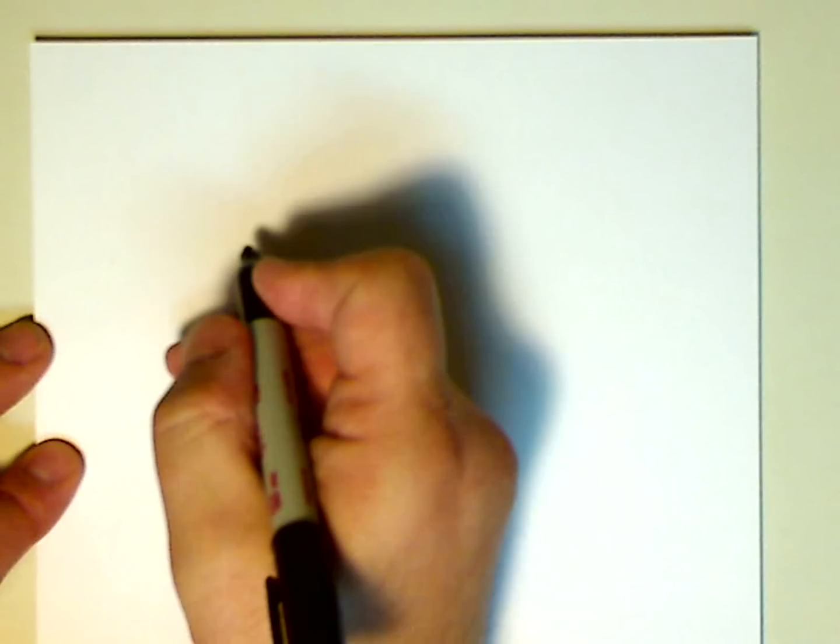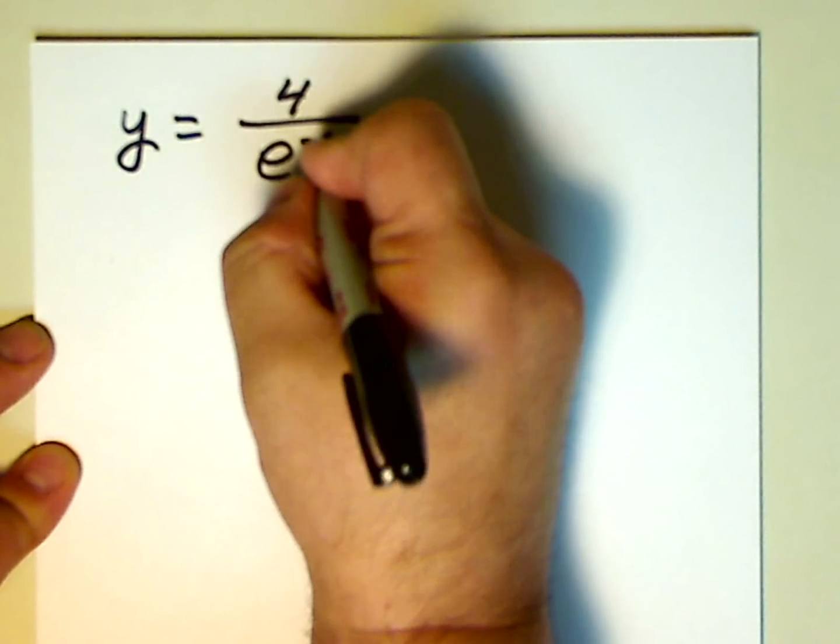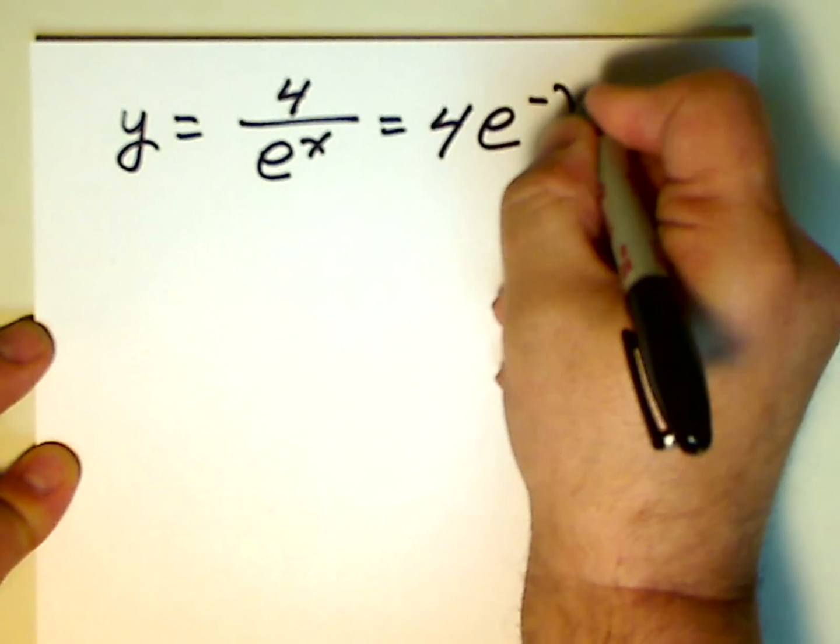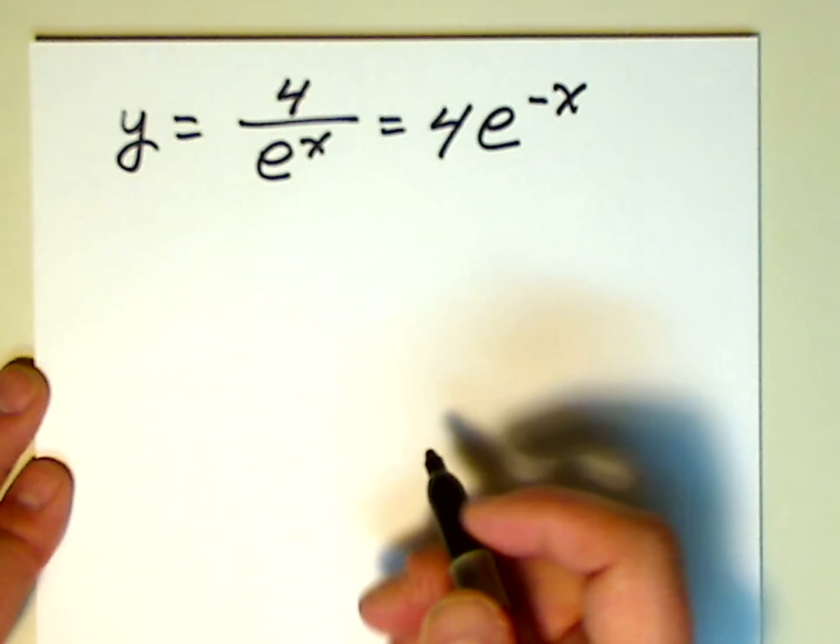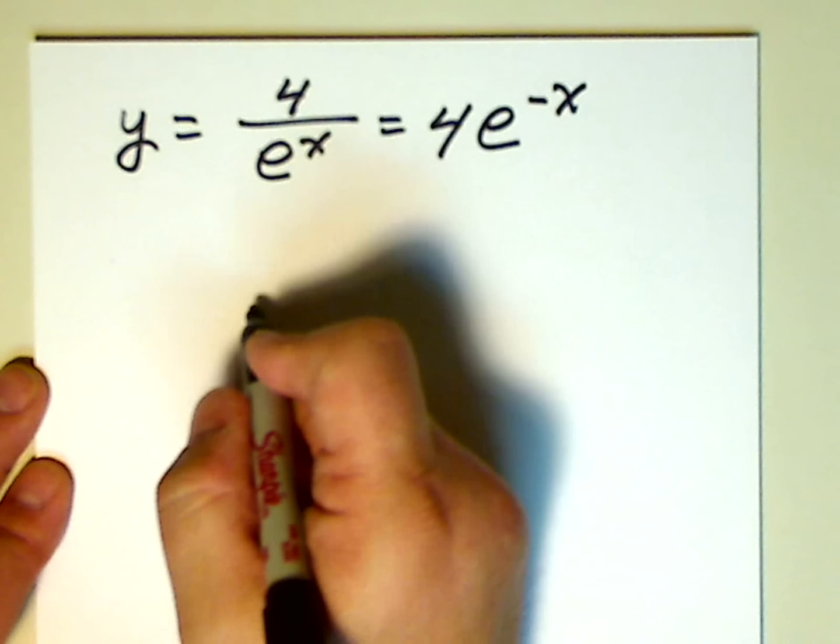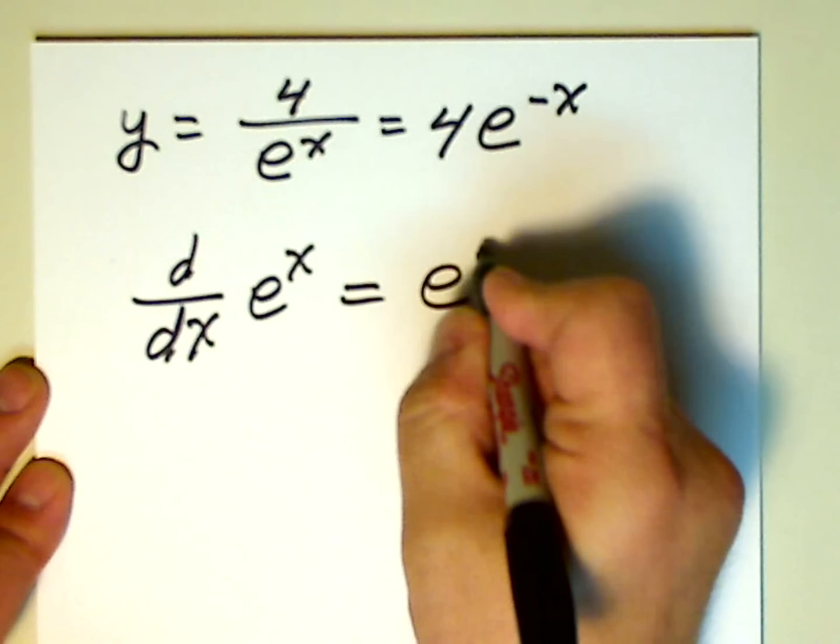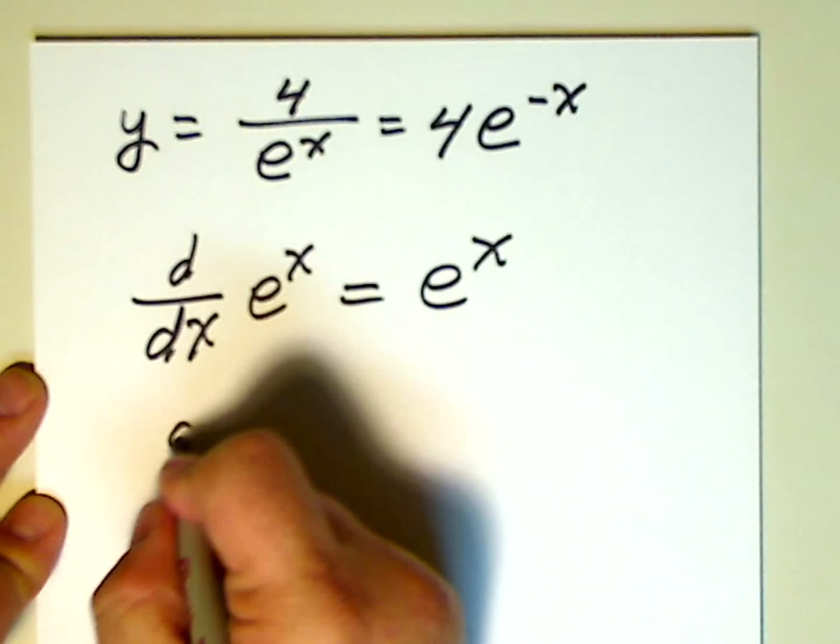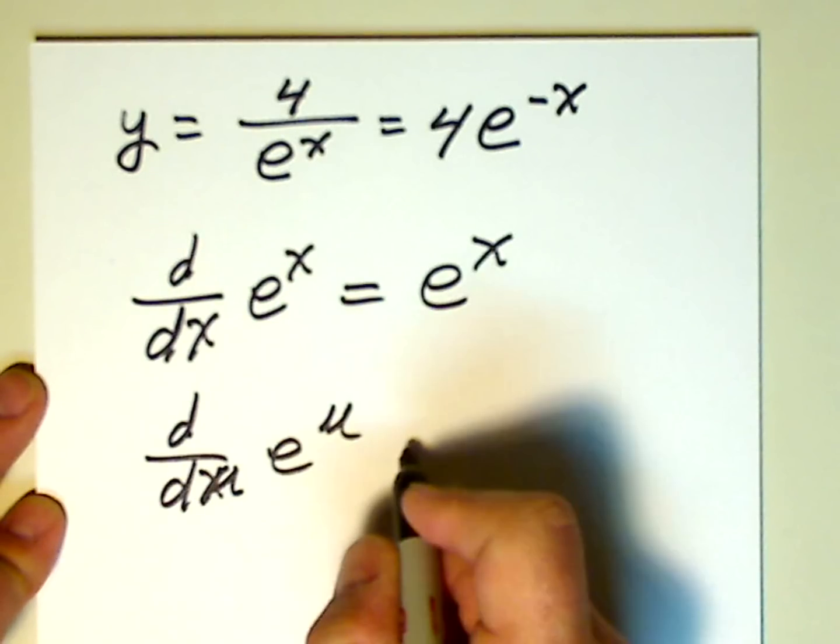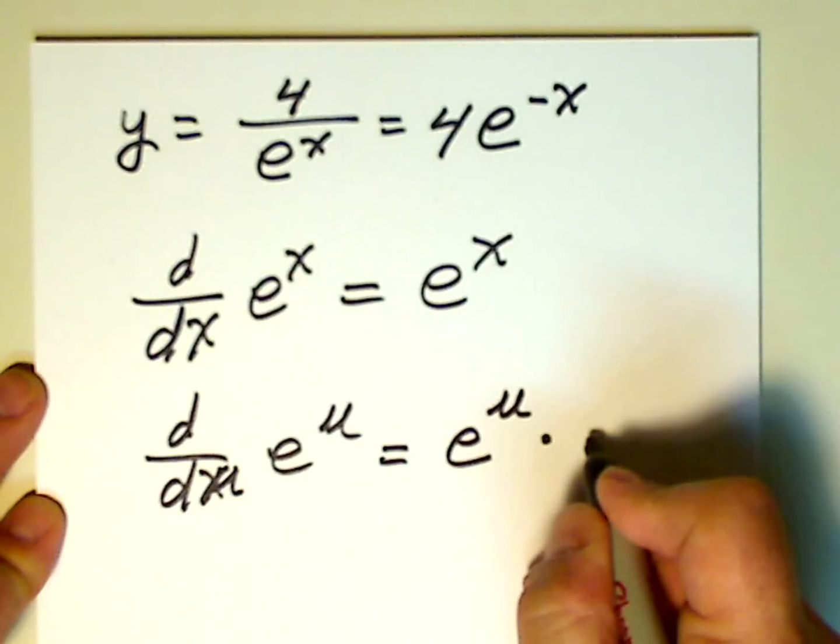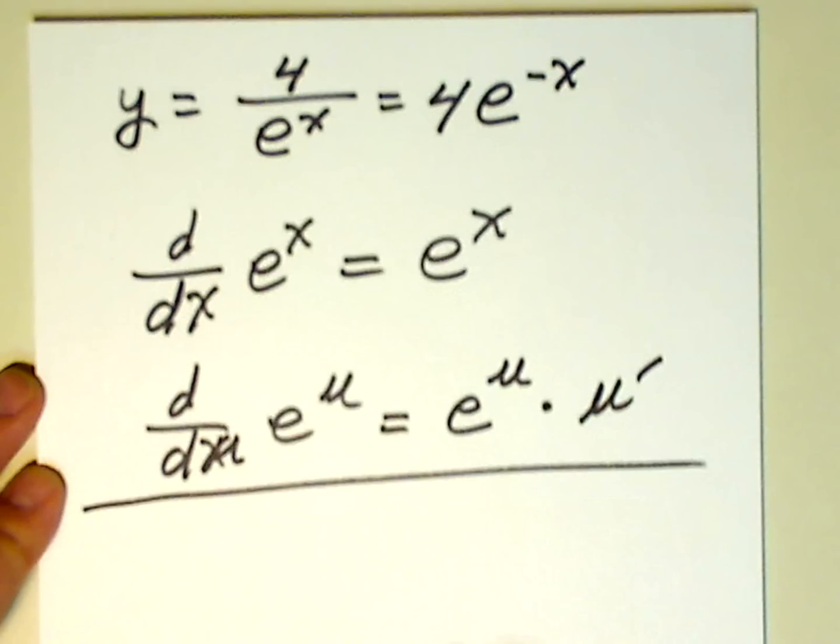Let's take one more problem here. How about one with the little number e? So how about y is equal to 4 over e to the x? Well, that can be rewritten as 4e to the negative x. Now, with the number e, this is technically a little chain rule problem that we have going on here. But the derivative of e to the x, in other words, d dx e to the x is e to the x. However, if we've got d dx e to the u, well, that's going to be equal to e to the u times the derivative of u, or u prime.